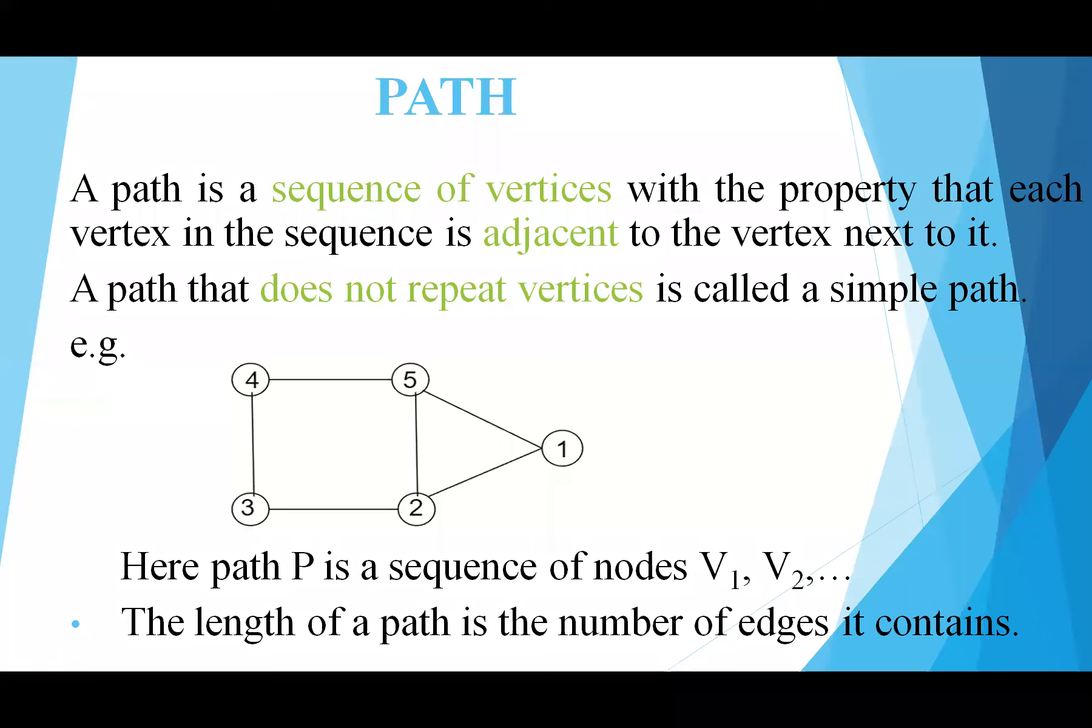A path that does not repeat vertices is called a simple path. For example, here path P is a sequence of nodes V1, V2, and so on till V5. The length of a path is the number of edges it contains.